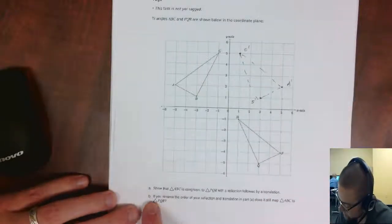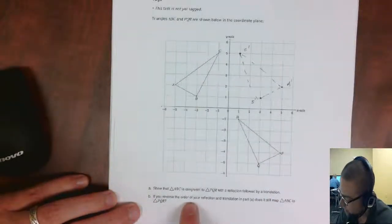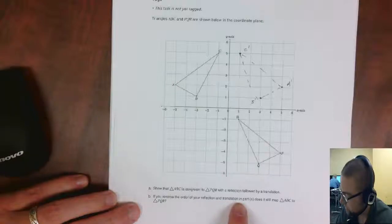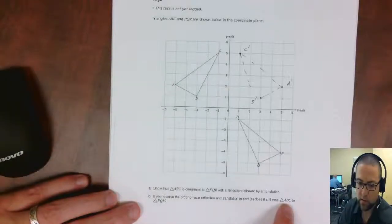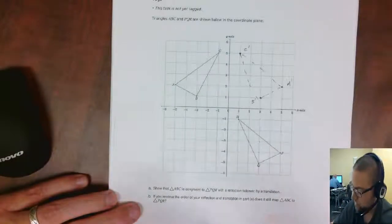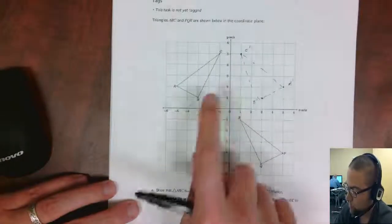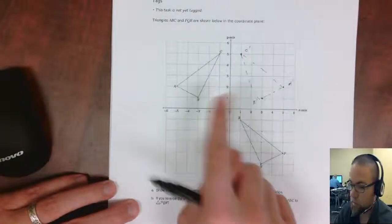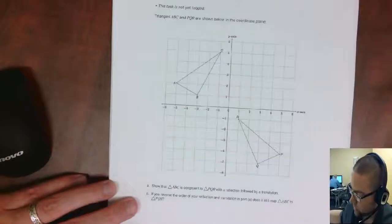Now the next question says, if you reverse the order of your reflection and translation in part A, does it still map ABC onto PQR? So we're going to reverse the order. Instead of doing reflection first, let's do translation first and see if we get the same thing.